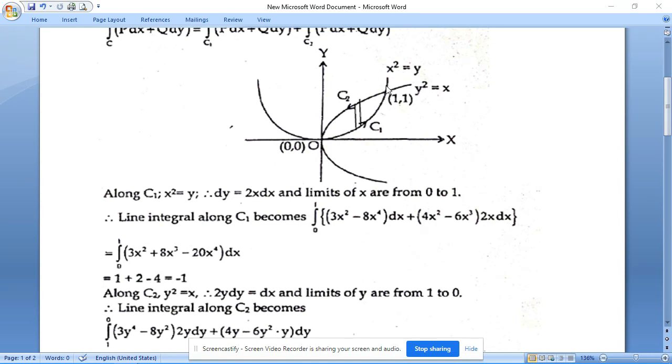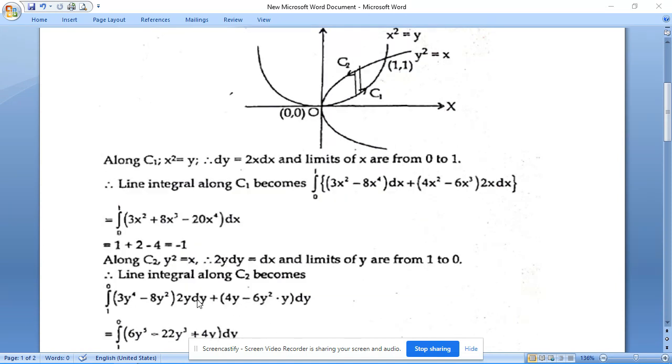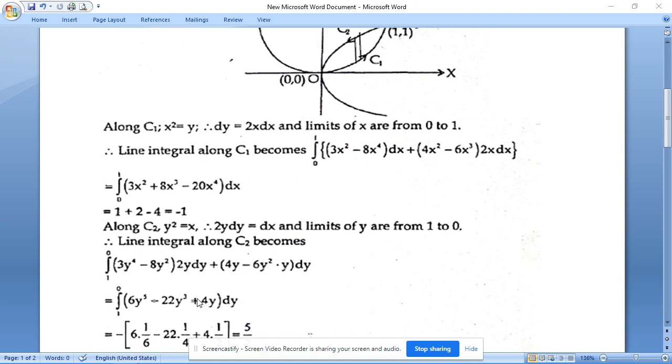Along C2, we have y² = x, which can be written as x = y². Differentiating on both sides, we get dx = 2y dy. So y limits are 1 to 0. These limits are taken for the second line integral 1 to 0, and x is replaced with y² and dx is replaced with 2y dy. So similarly, line integral C2 can be evaluated easily.